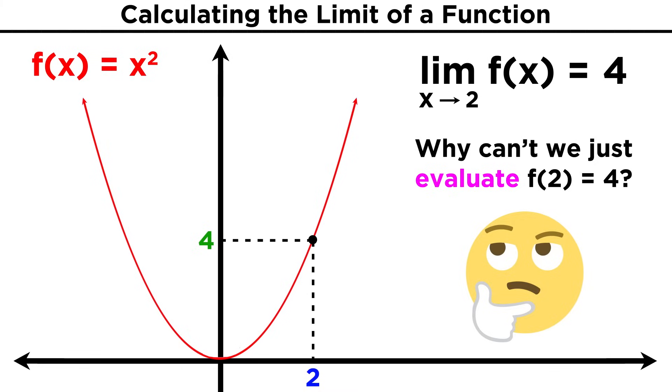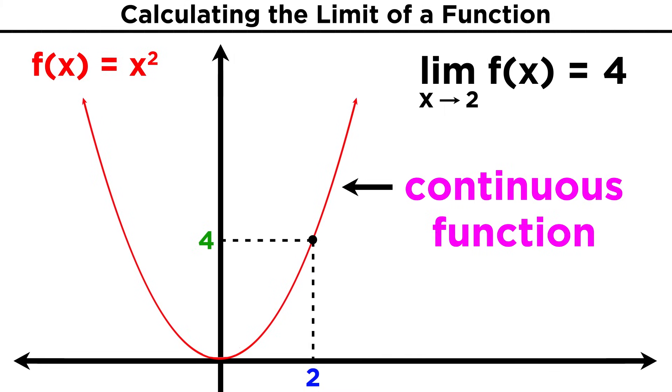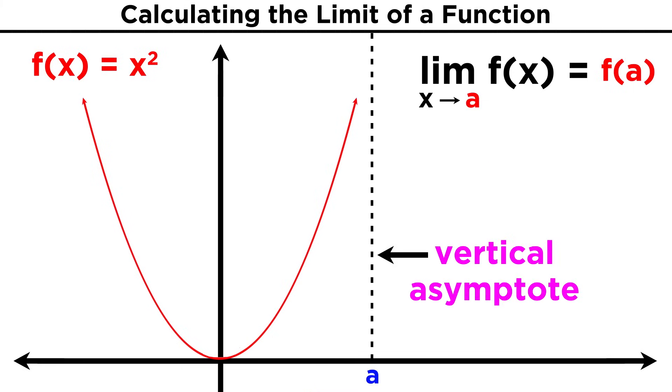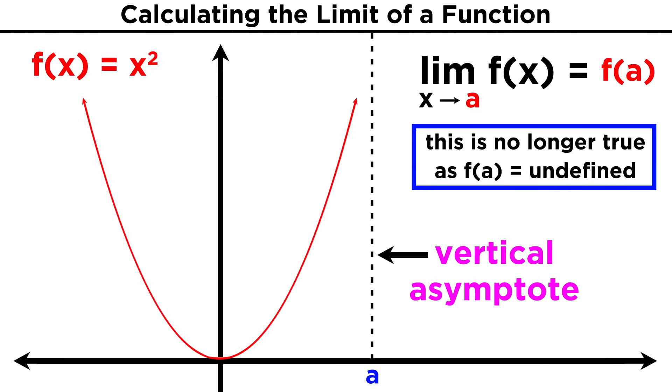One might wonder why we don't simply evaluate the function at x equals two, and get four. This is a totally valid question, and in this example there is no difference. That's because this is a continuous function. The limit of the function as x approaches a is f(a). But some functions have vertical asymptotes, and we will want to know what a function does as it approaches that asymptote from either side, but we can't just plug in the value where the asymptote occurs, as for that input, the function will be undefined.